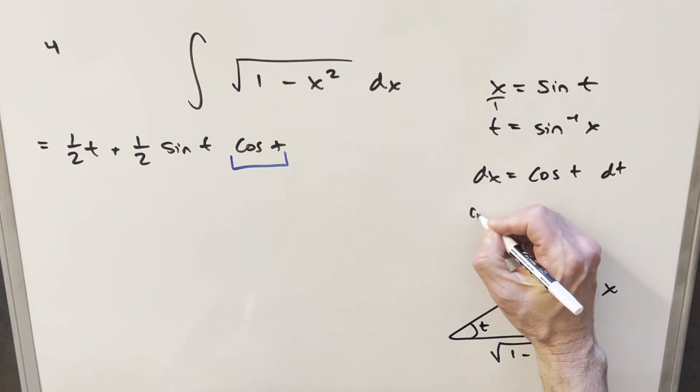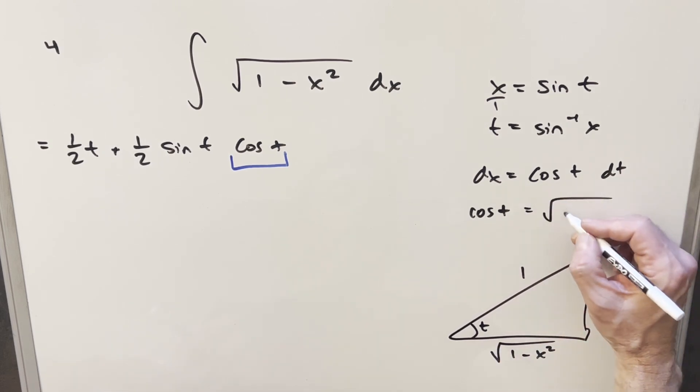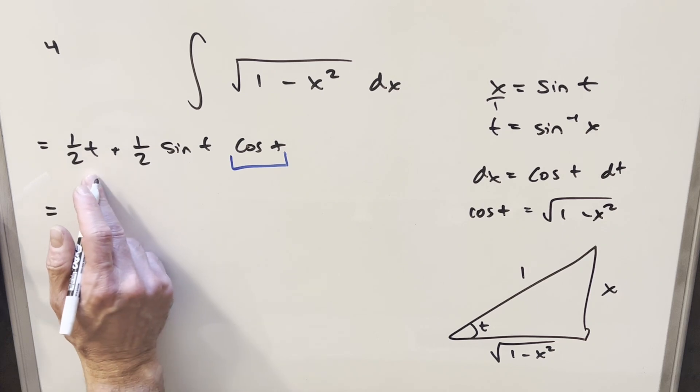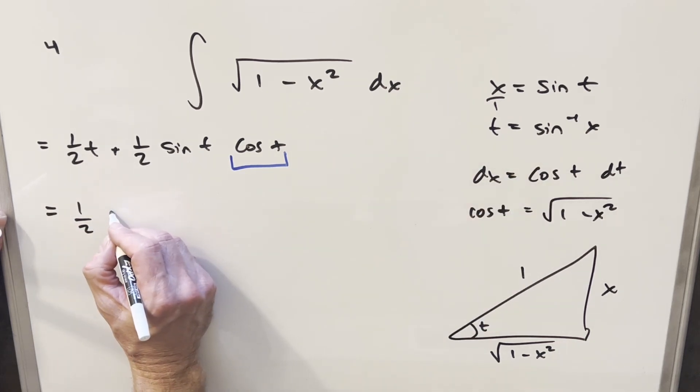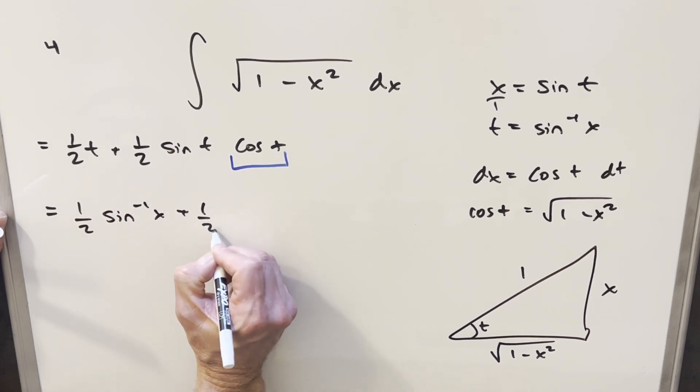And so we want a value for cosine of t. Cosine is going to be adjacent over hypotenuse, so it's just going to be this square root of 1 minus x squared. But now that we have this, we've got everything we need to finish this off and back substitute. So for our first piece, our t value is going to be, we're going to have 1 half arc sine of x plus 1 half.